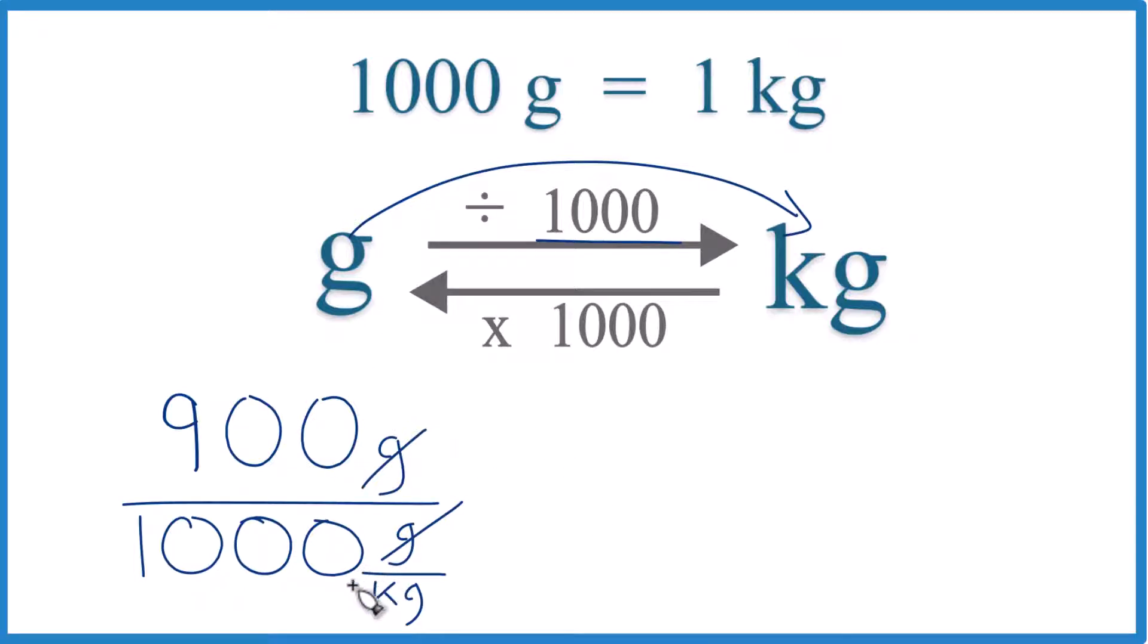So let's do this. Let's move the decimal point 1, 2, 3. That gives us 1, and then on the top 1, 2, 3, we get .900. So 900 grams equals .900 kilograms.